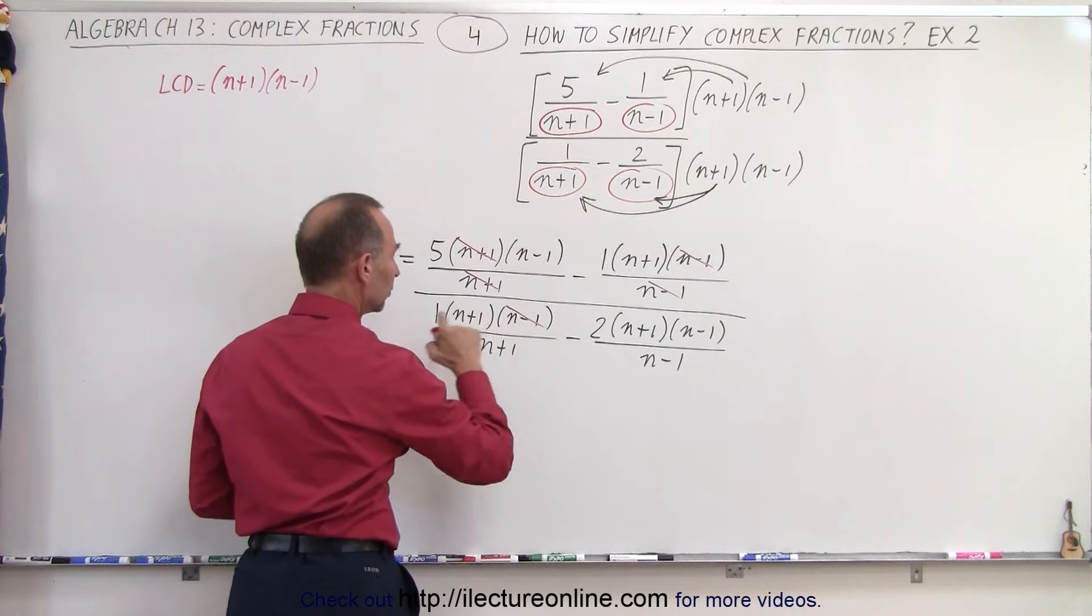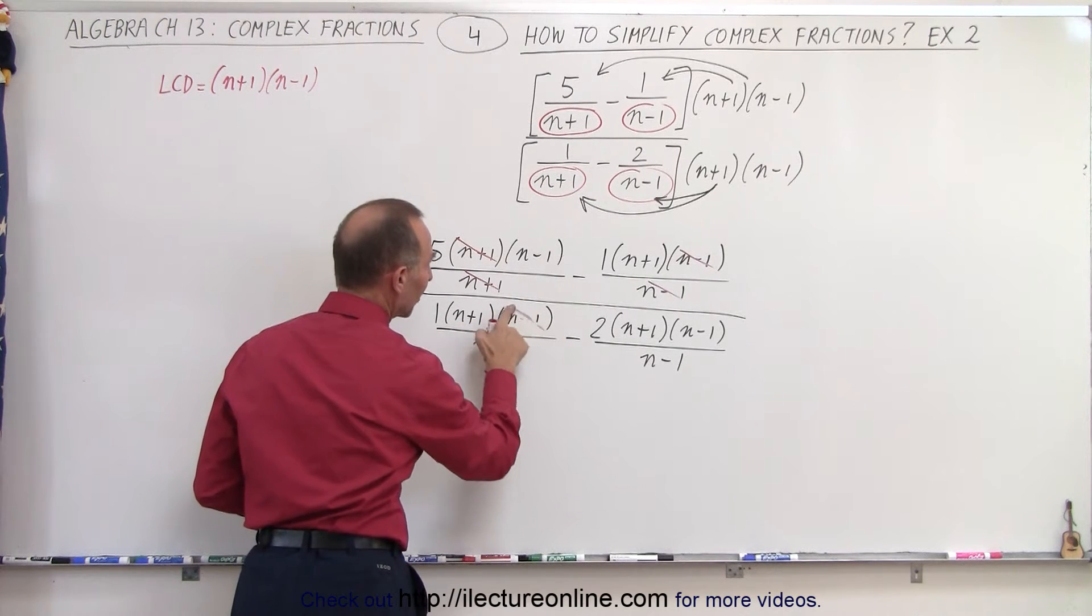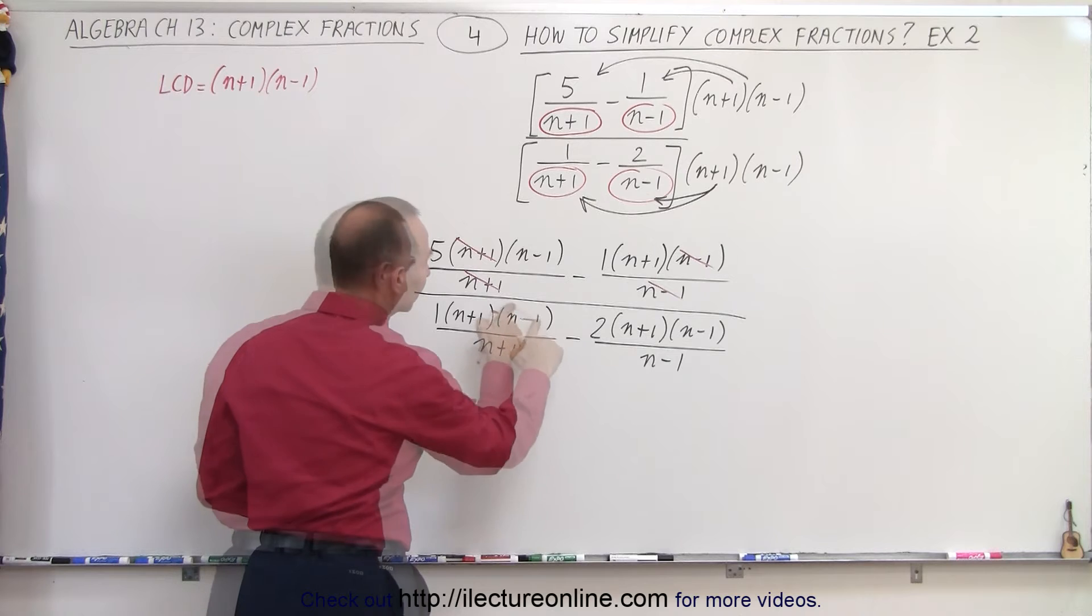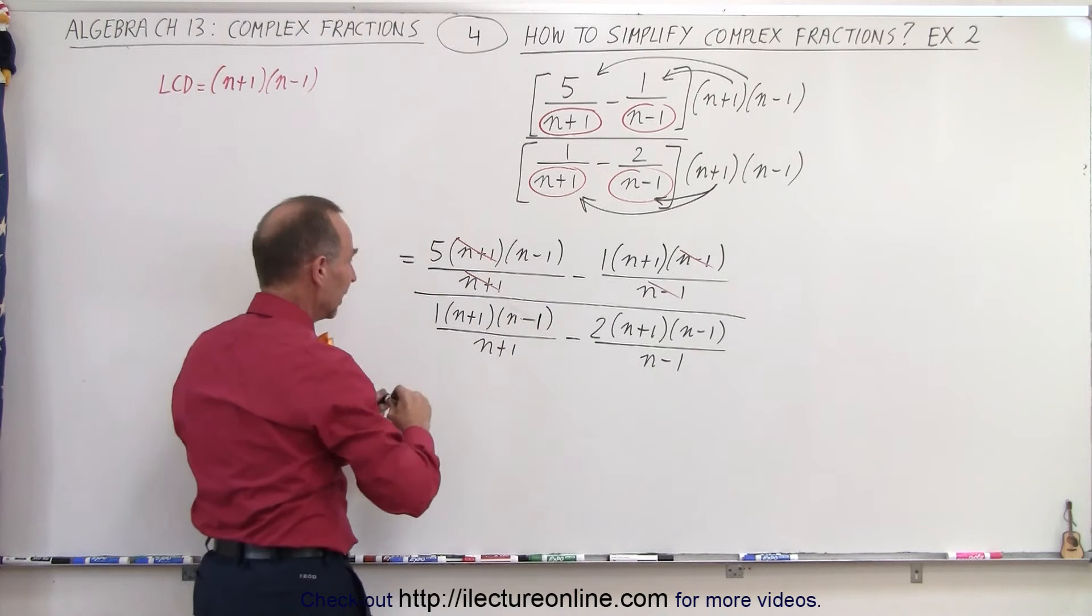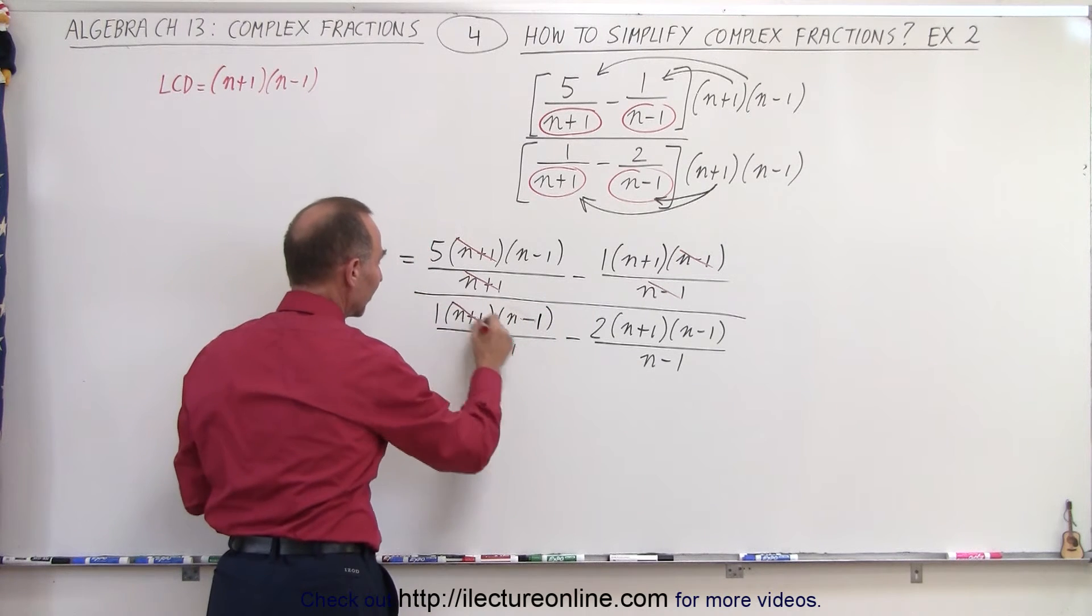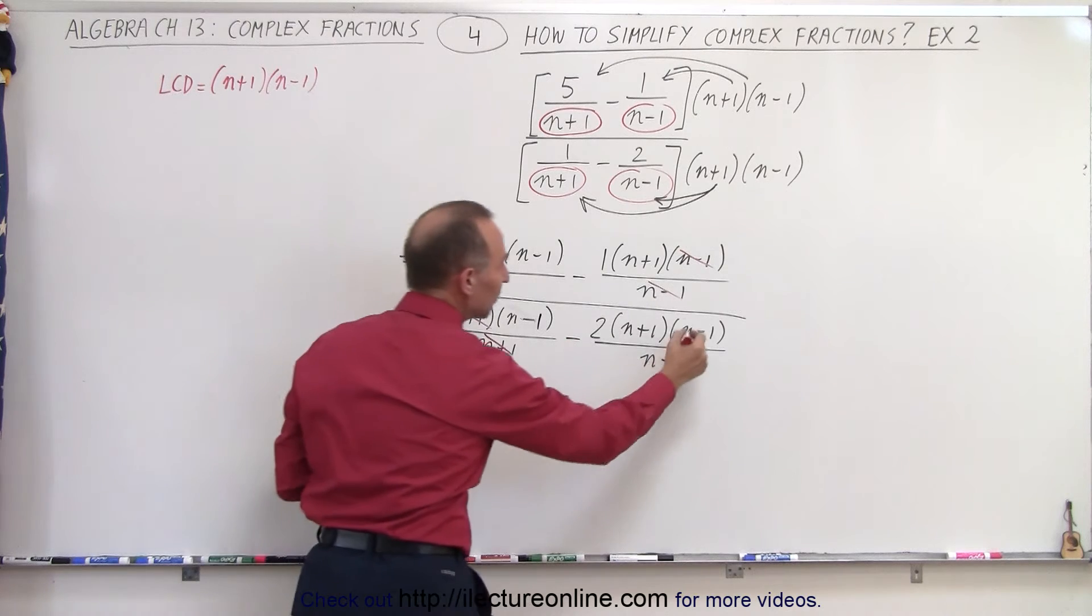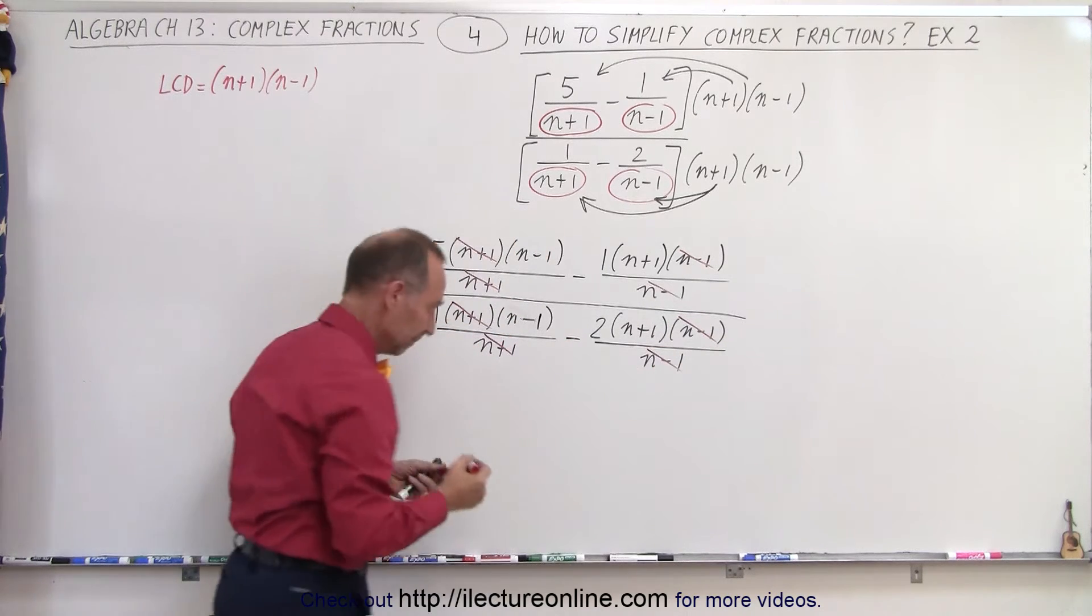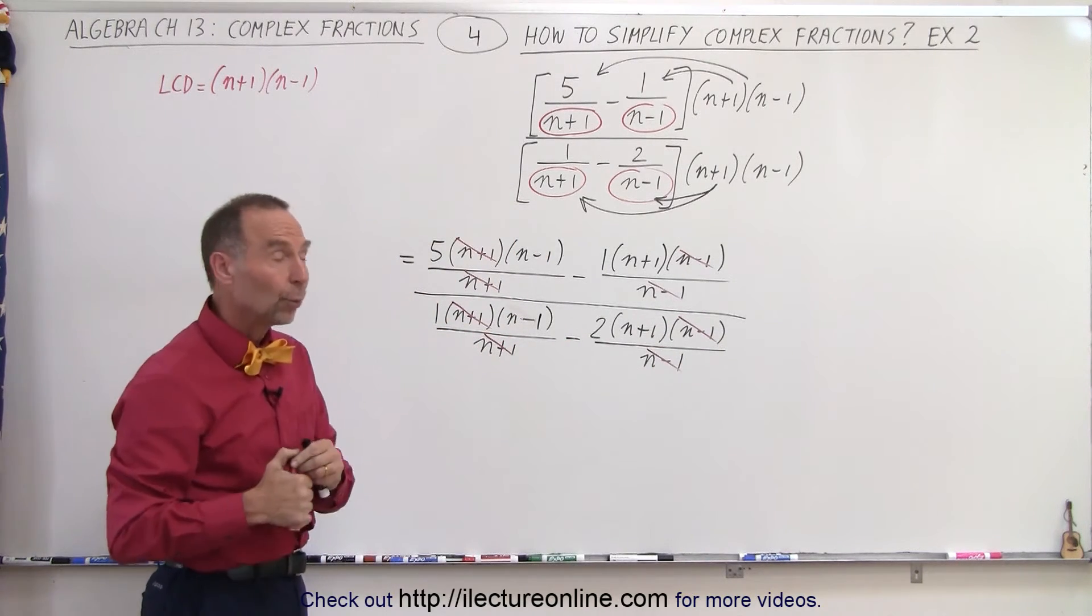N minus, whoops, no, this doesn't cancel out. That's the wrong one. And it's the n plus 1 that cancels out. And over here, we have an n minus 1 cancels out with an n minus 1. After we do that, what do we have left?